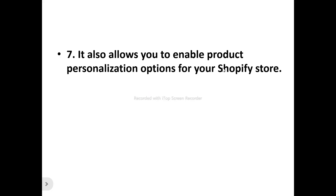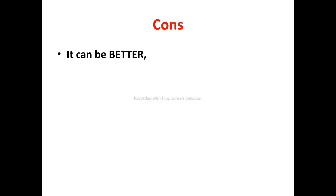Pro number seven: Zapier allows you to enable product personalization options for your Shopify store. You can add multiple options to your products, allowing customers to personalize their orders. You can apply options to products in bulk based on vendor, product type, tags, and collections. It supports a variety of option types such as text, checkboxes, swatches, and radio buttons. You can automatically update product images based on selected options, implement charges per option for dynamic pricing, let customers modify selected options directly in the cart, and monitor revenue generated by product options.